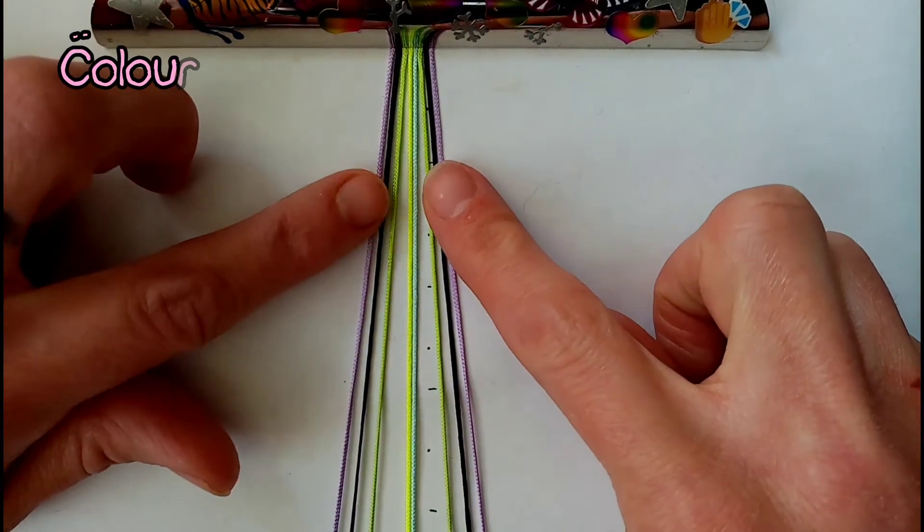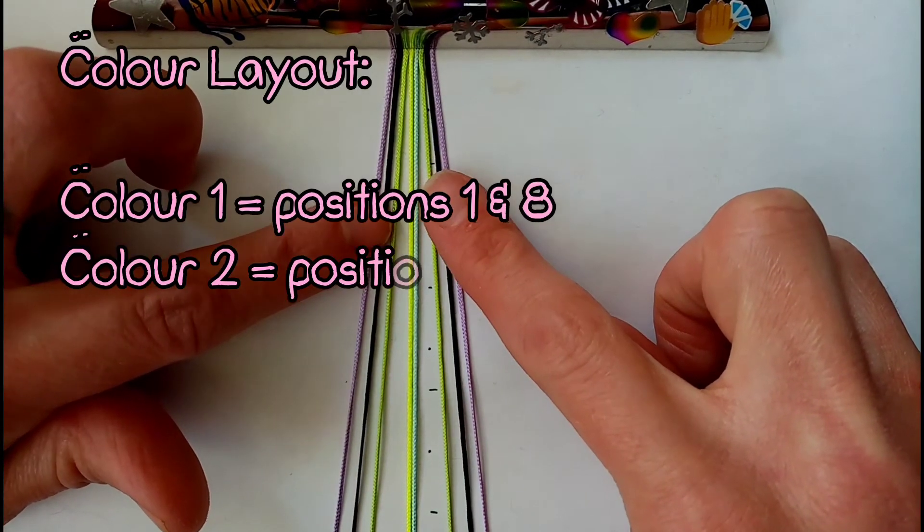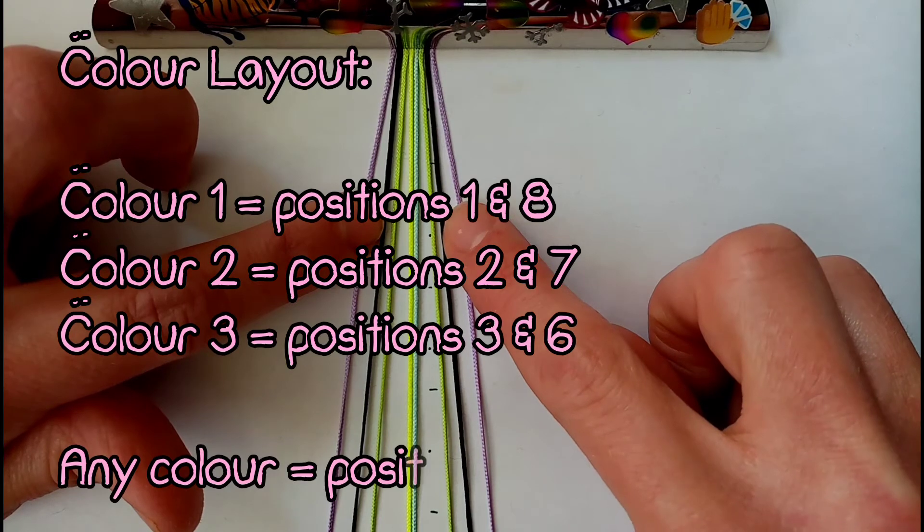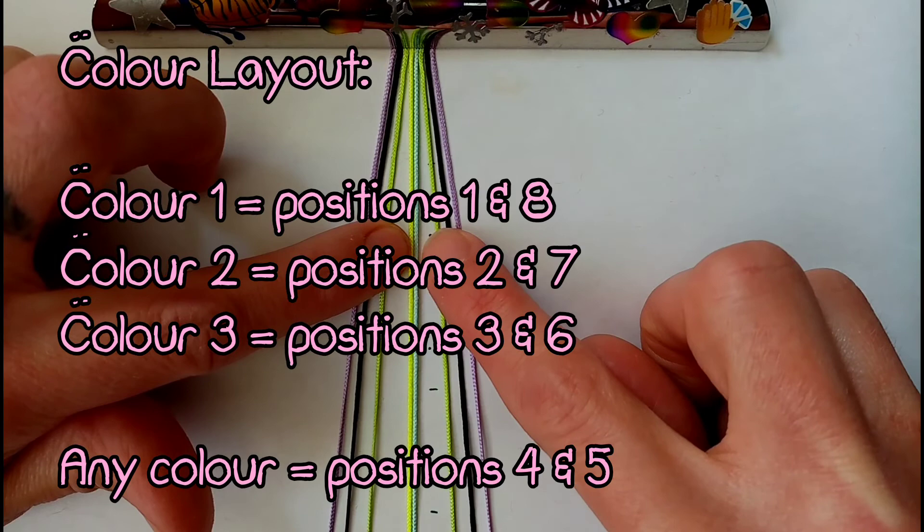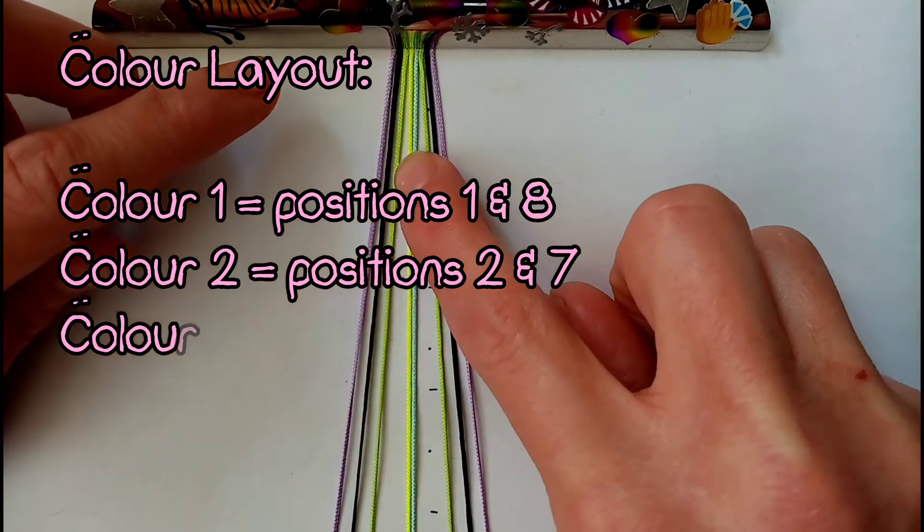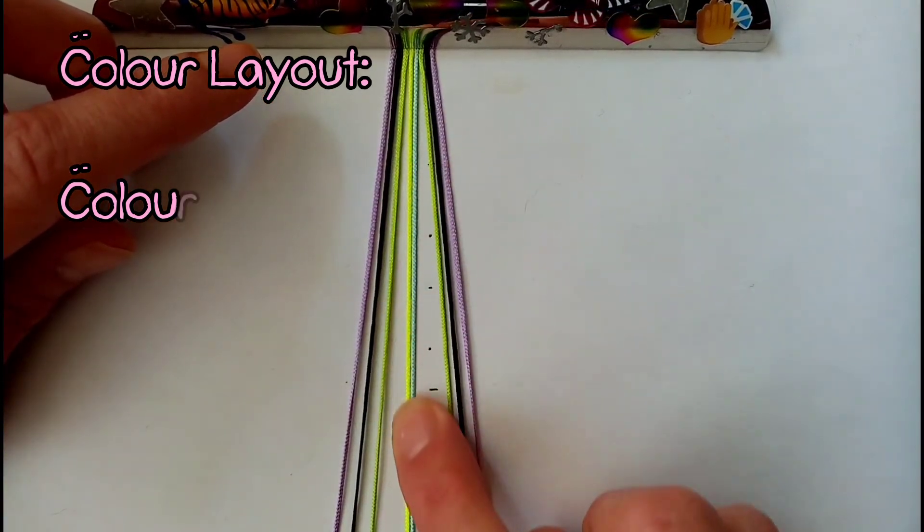For this pattern the color layout should be symmetrical with color 1 in positions 1 and 8, color 2 in positions 2 and 7, and color 3 in positions 3 and 6. The cords in positions 4 and 5 can be any color as they won't show up in the pattern.